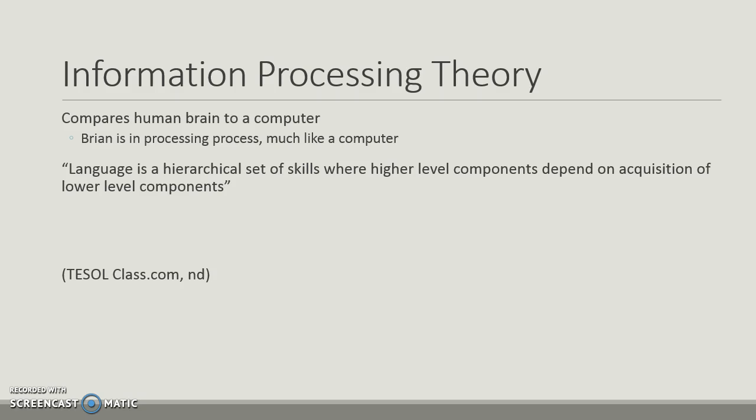The information processing theory is a more recent theory that compares the human brain to a computer. Language is a hierarchical set of skills where higher-level components depend on the acquisition of lower-level components.